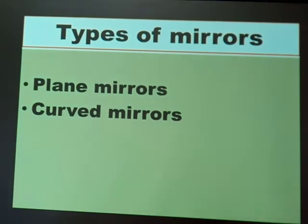Now that we have known how mirrors are made and what mirrors are, let us go to our next heading: types of mirrors. Mirrors are grouped according to their appearance. We have plain mirrors — those that are flat — and we also have curved mirrors. Those that are flat are called plain mirrors, and those that are curved are called curved mirrors.